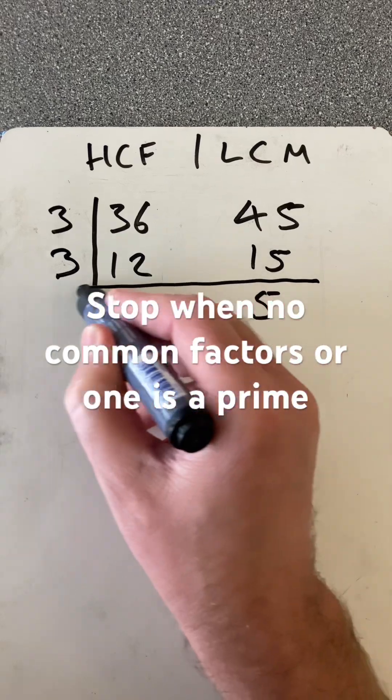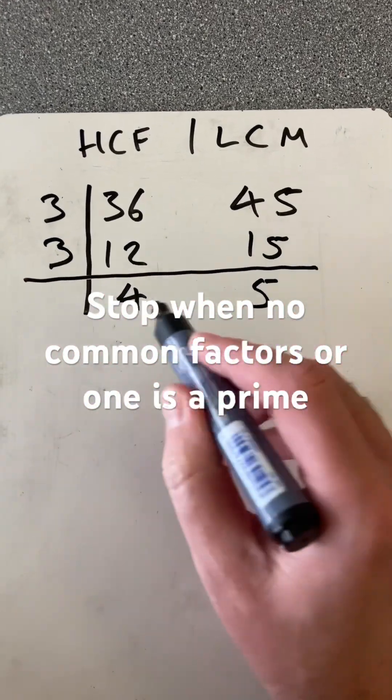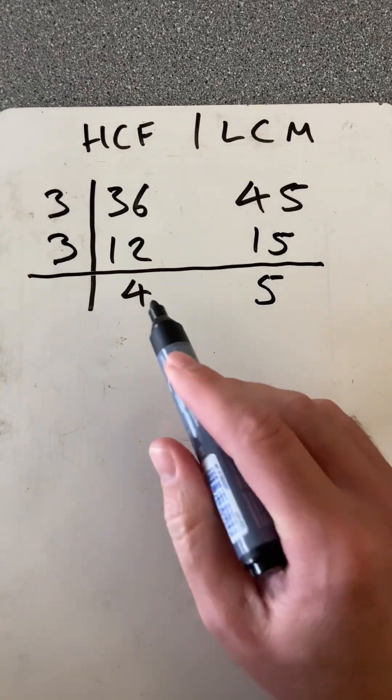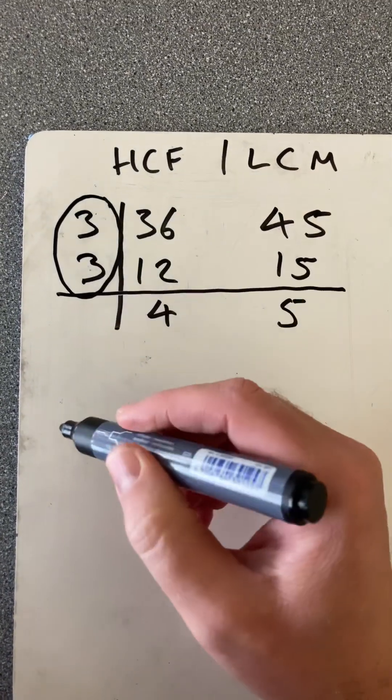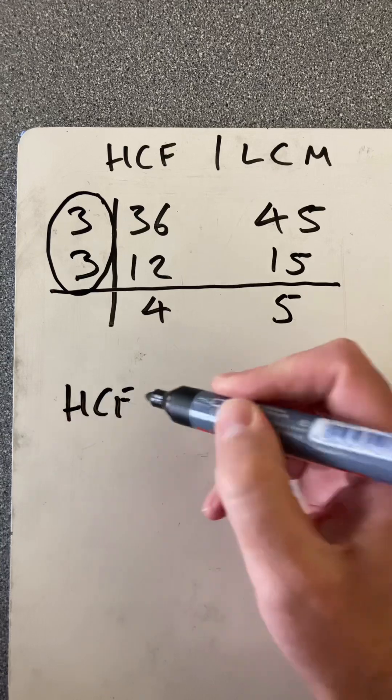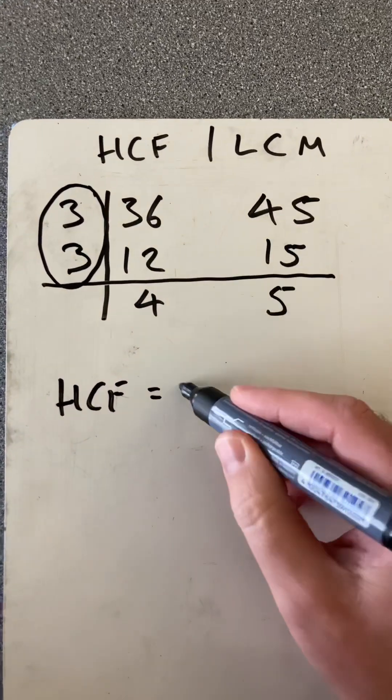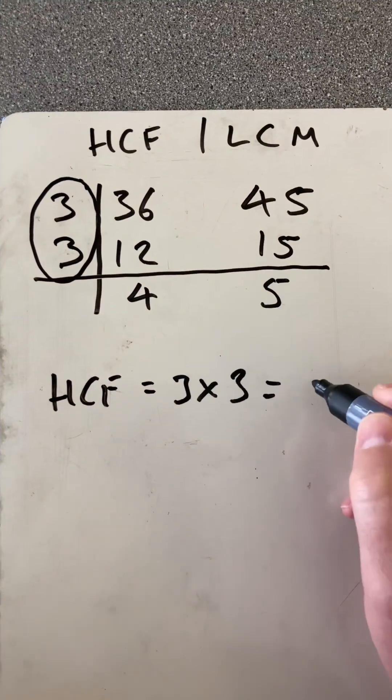I stop there because I have a prime number, so there are no common factors between these two. And this column then gives me the highest common factor. So the highest common factor is the product of those numbers, 3 times 3, which is 9.